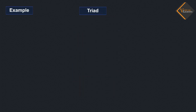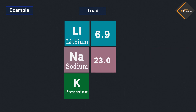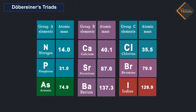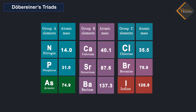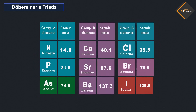For example, take the triad consisting of lithium, sodium, and potassium with the respective atomic masses 6.9, 23.0, and 39.0. What is the average of the atomic masses of lithium and potassium? How does this compare with the atomic mass of sodium? Given below are some groups of three elements. These elements are arranged downwards in order of increasing atomic masses.